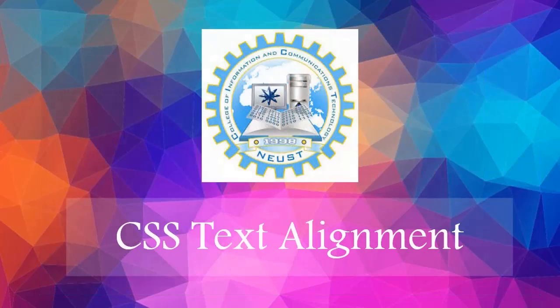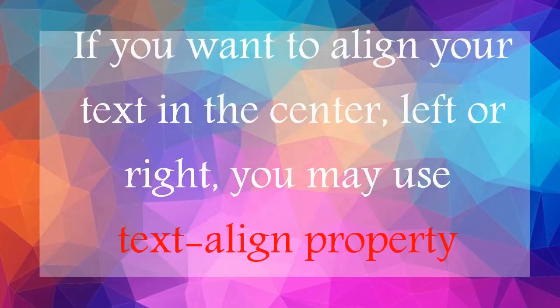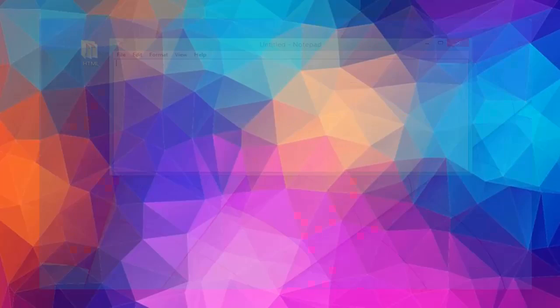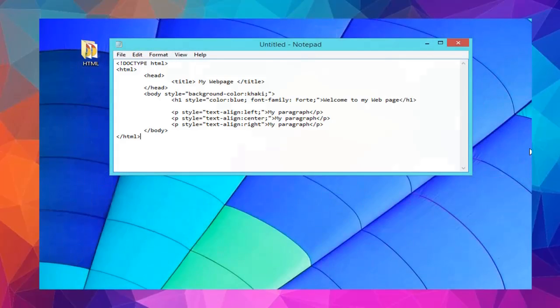CSS Text Alignment. If you want to align your text in the center, left, or right, we can use the text-align property. The text-align property defines the horizontal text alignment for an HTML element. This is the sample.